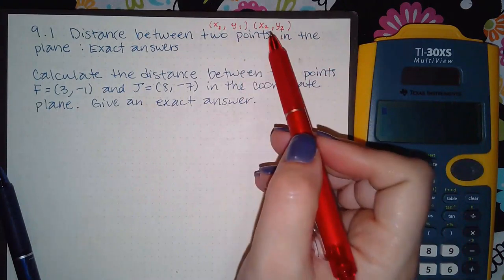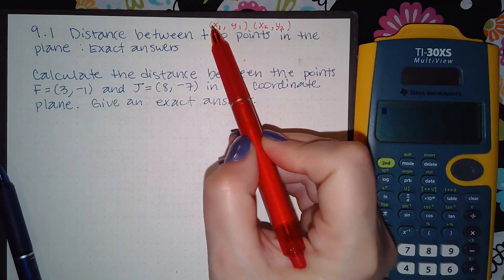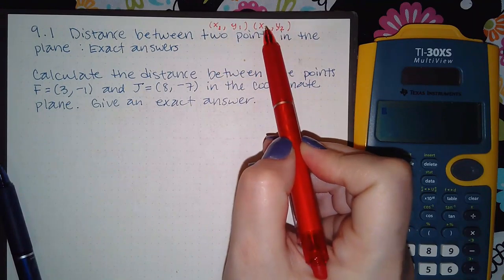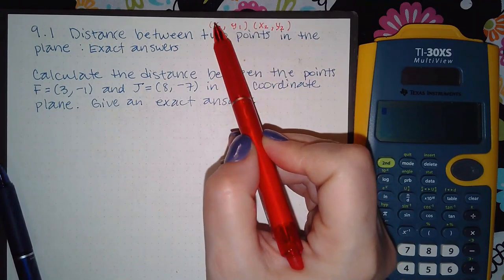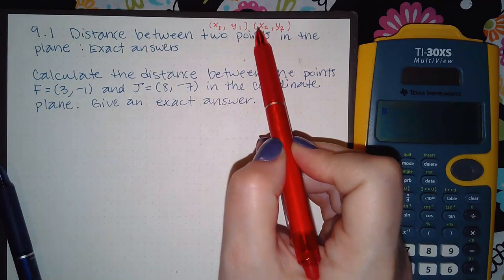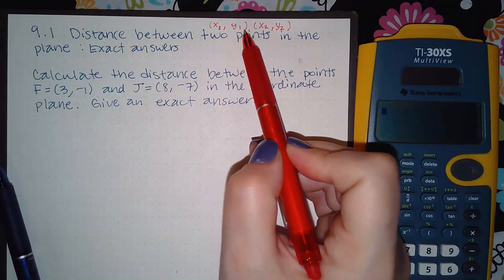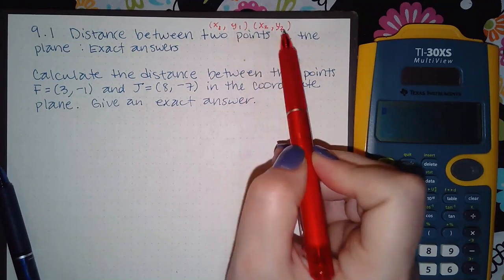This is the notation to label the points. You use a subscript to distinguish this x value from this x value. The one means the x value from the first point and the two means the x value from the second point. Similarly for the y values, the subscript one means the first y value, the two means the second y value.